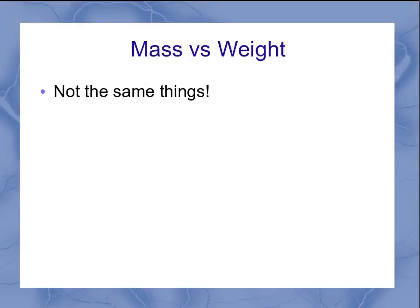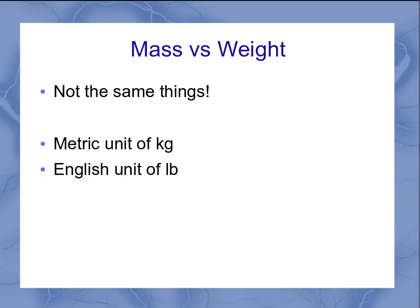One of the things you have to be careful with when it comes to mass is confusing it with weight. In our physics course, we're going to study this in more detail so you can understand why there's a difference between mass and weight — but they're not the same things. It often gets confusing because we use them as if they're interchangeable. For example, the metric unit of kilogram and the English unit of a pound: kilogram is a mass, but a pound is actually a weight. So be very, very careful to keep track of what's a mass and what's a weight.